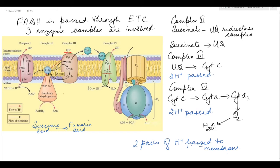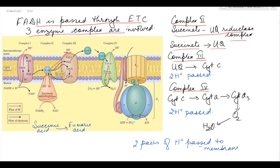When FADH2 is passed through the electron transport chain, three enzyme complexes are involved: Complex 2, Complex 3, and Complex 4. Complex 2 is the succinate ubiquinol reductase complex, which catalyzes the transfer of electrons from succinate to ubiquinol. Succinate dehydrogenase is present in the inner membrane of mitochondria — the only enzyme of the Krebs cycle found there. It catalyzes the reduction of succinic acid to fumaric acid, producing FADH2. Complex 2 catalyzes the transfer of electrons from FADH2 to ubiquinol.